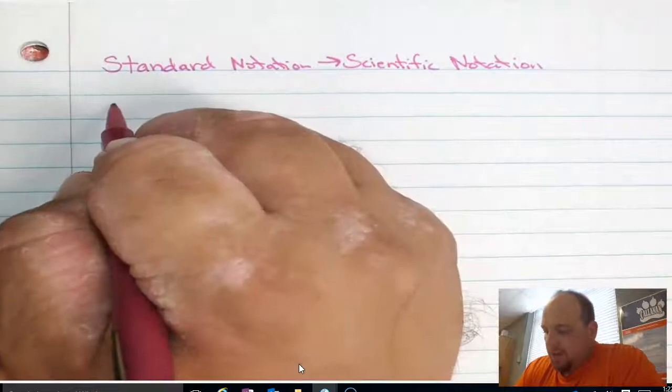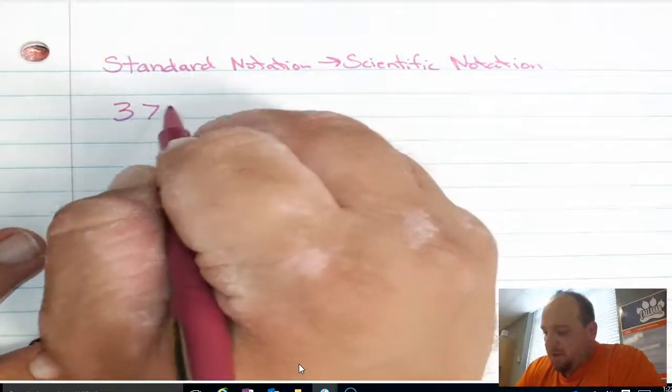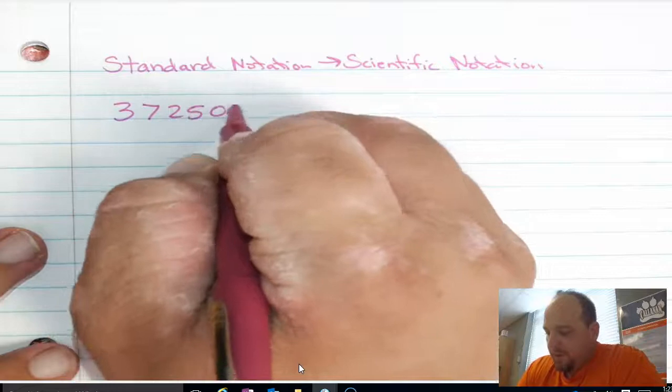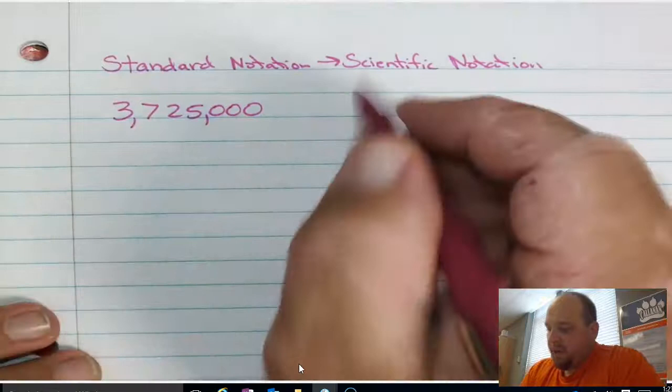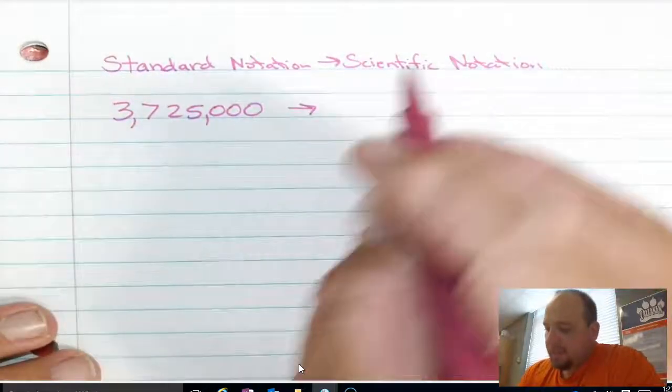So standard notation is just a number written normally like 3,725,000. I'm going to add in the commas just so you can see that. And we're going to change this number. We're going to go from standard notation to scientific notation.